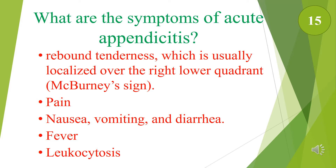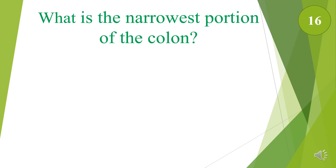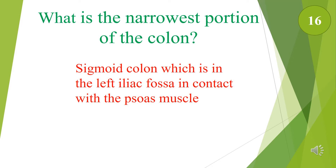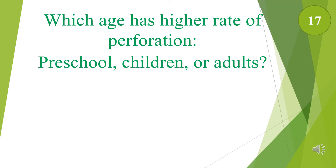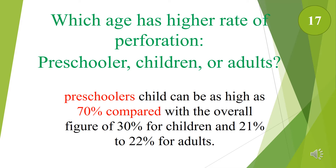What is the narrowest portion of the colon? The sigmoid colon, which is in the left iliac fossa in contact with the psoas muscle. Which age group has a higher rate of perforation — preschool, children, or adults? Preschoolers have the highest rate at about 70%, compared to 30% in children and 21% in adults.